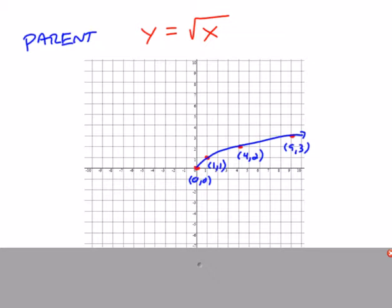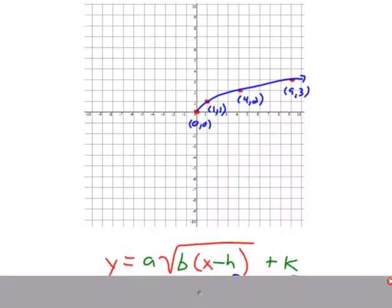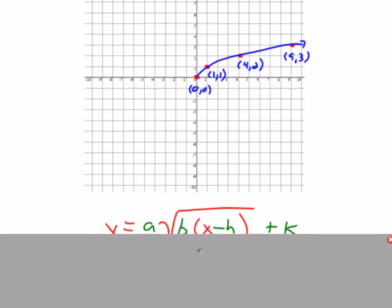These are some of the points that belong to the parent function: (0,0), which is the endpoint where the function ends; (1,1); (4,2); (9,3). If you were to continue, (16,4), (25,5). These are points that you saw on a quadratic function but just with the x and y flipped.